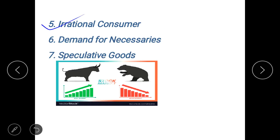The fifth one is an irrational consumer. Now the law of demand expects a consumer to be rational, to make prudent and informed decisions. But a consumer cannot always be rational. Sometimes he takes impulsive decisions also, so in those cases the law of demand does not apply.